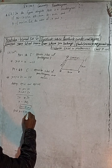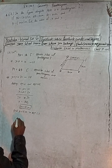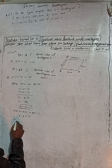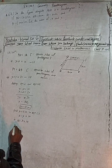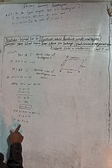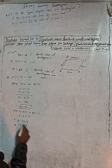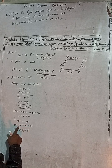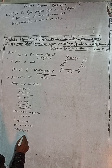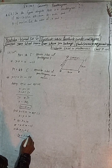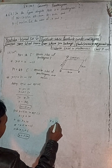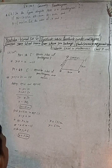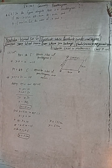Now put x equals 15 into Equation 1: x minus y equals 10, so 15 minus y equals 10. This implies minus y equals 10 minus 15, which is minus 5, therefore y equals 5 cm. Our answer is x equals 15 cm and y equals 5 cm. This matches the book answer, so this is correct. This is the solution of 6B.